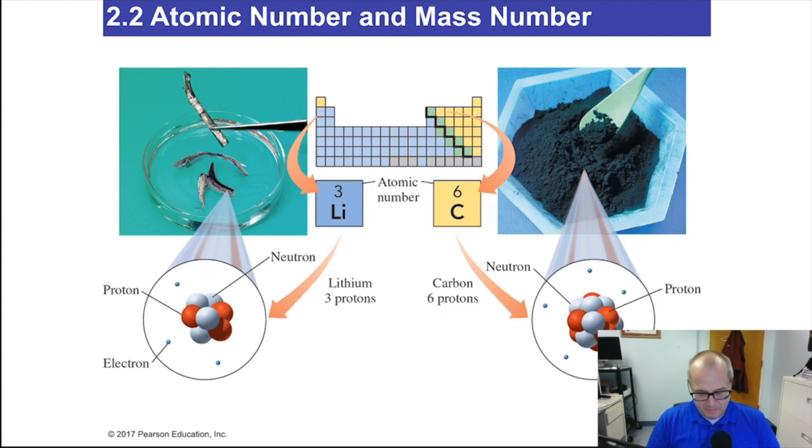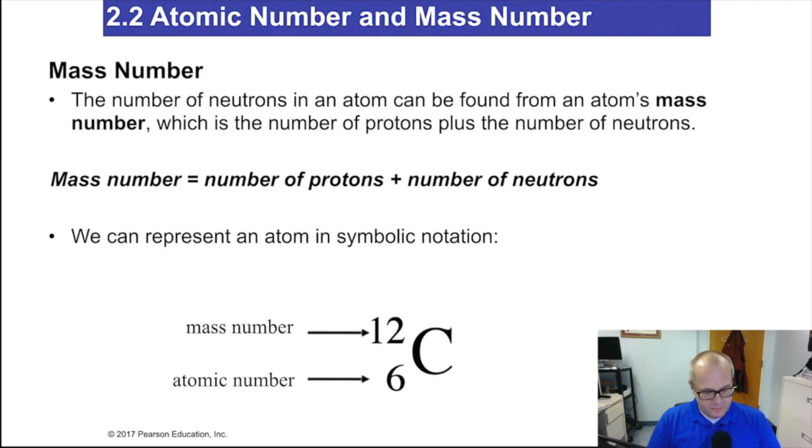Mass number. Mass number is the number of neutrons and the number of protons in an atom. That's called the mass number. Number of protons, number of neutrons. So quite literally, a mass number is the number of particles in a nucleus. Now that's pretty cool. It's the number of particles in a nucleus.